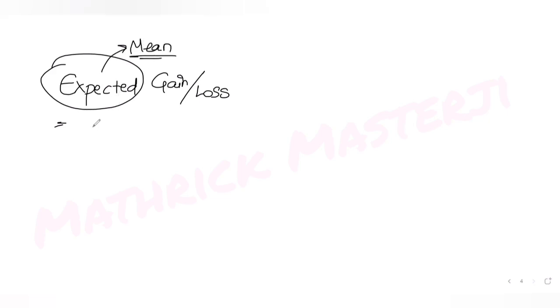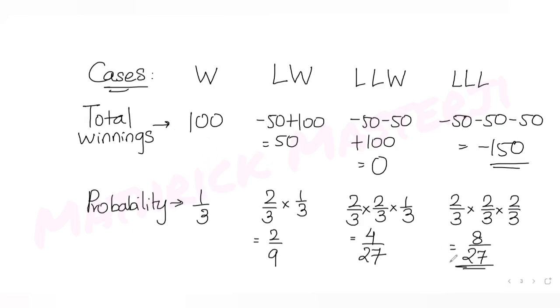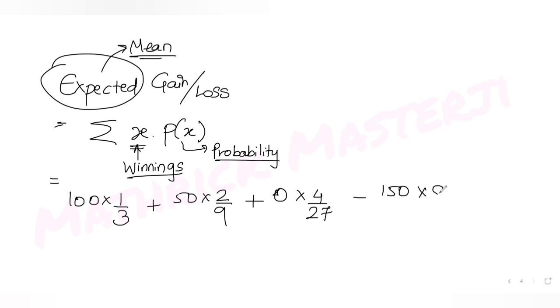Now that we have both the net winnings and probabilities for each case, we find the expected gain or loss. Expected value means finding the mean, which is the summation of x times P(x). So we multiply each net winning by its probability and sum them all: 100 × (1/3) + 50 × (2/9) + 0 × (4/27) + (−150) × (8/27).